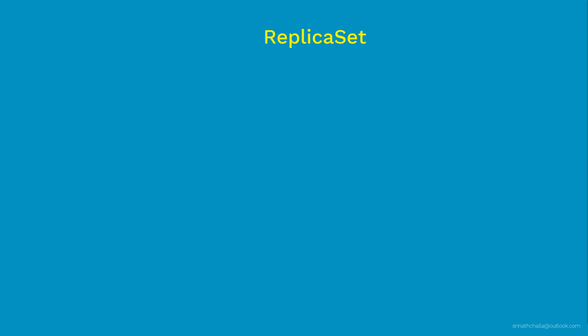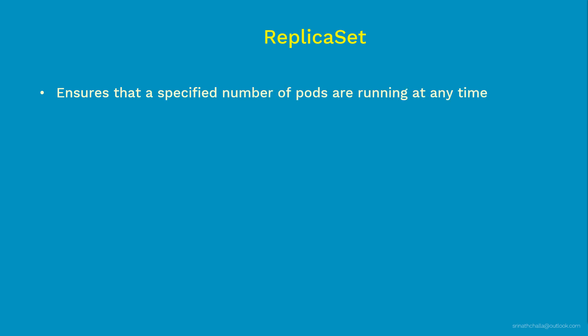So what is a ReplicaSet exactly? ReplicaSet ensures that a specified number of pod replicas are always running at any point in time. If you define there should be 5 pods running at any time using a ReplicaSet, then this controller will make sure those 5 pods are up and running always. If there are too many pods running, the ReplicaSet will terminate the extra pods, and if there are fewer pods, it will start more.